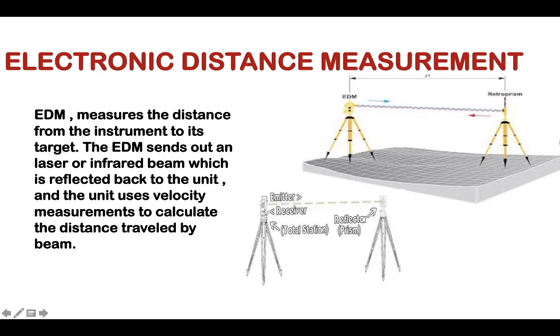The waves emitted from the electronic distance measurement equipment reach the reflector, which might be in the form of a prism, and then return back to the EDM equipment. The distance is measured with the help of time taken for this procedure. You will know that distance equals velocity times time, and here the velocity is considered as the speed of light.